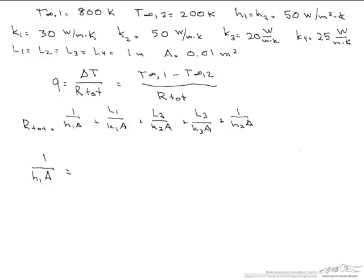This equals 1 divided by 50 watts per meter squared K times the area, which is 0.01 meters squared. This equals 2 K, which is Kelvin per watt. This also, because our H's are the same, is going to equal 1 over H2A.